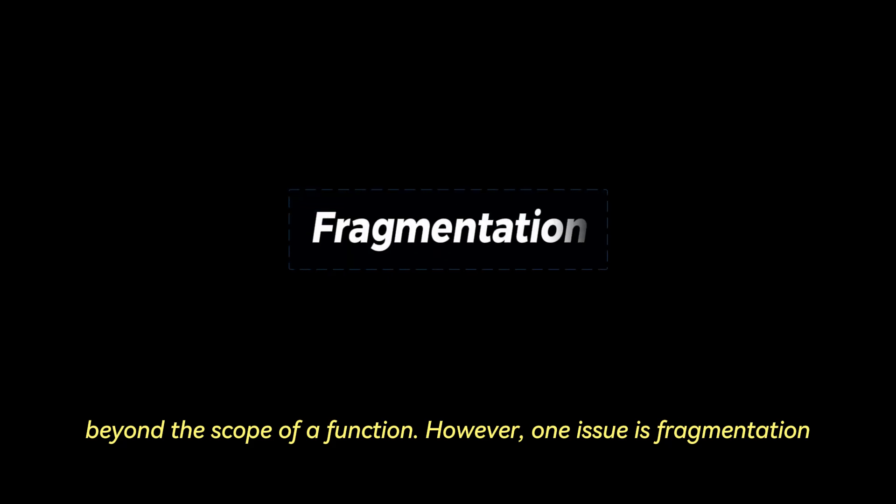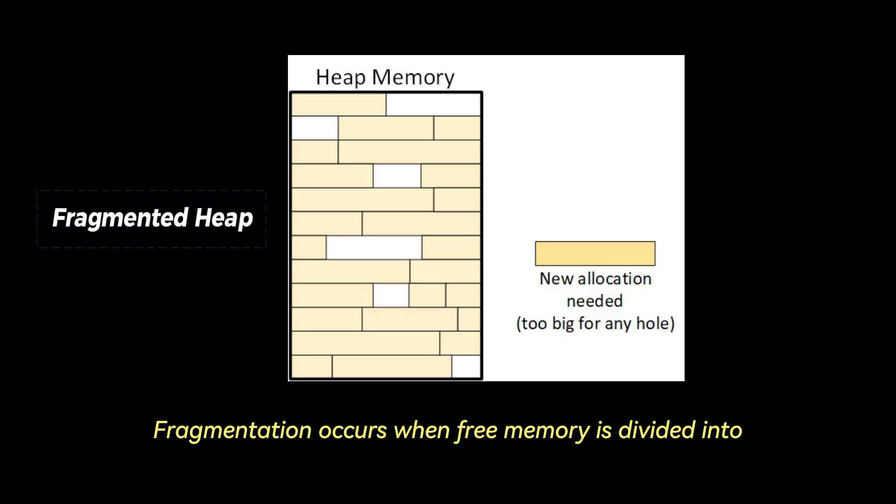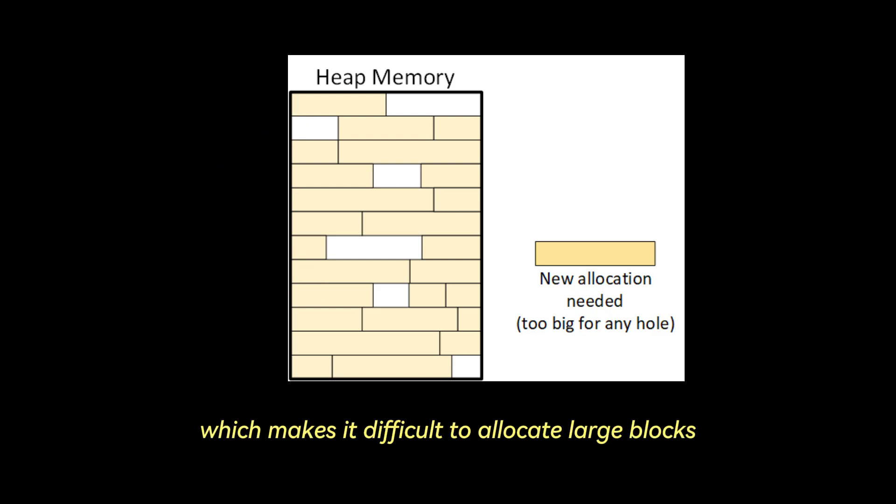However, one issue is fragmentation. Over time, as memory is allocated and freed, the heap can become fragmented. Fragmentation occurs when free memory is divided into small contiguous blocks, which makes it difficult to allocate large blocks even if there's enough total free memory.